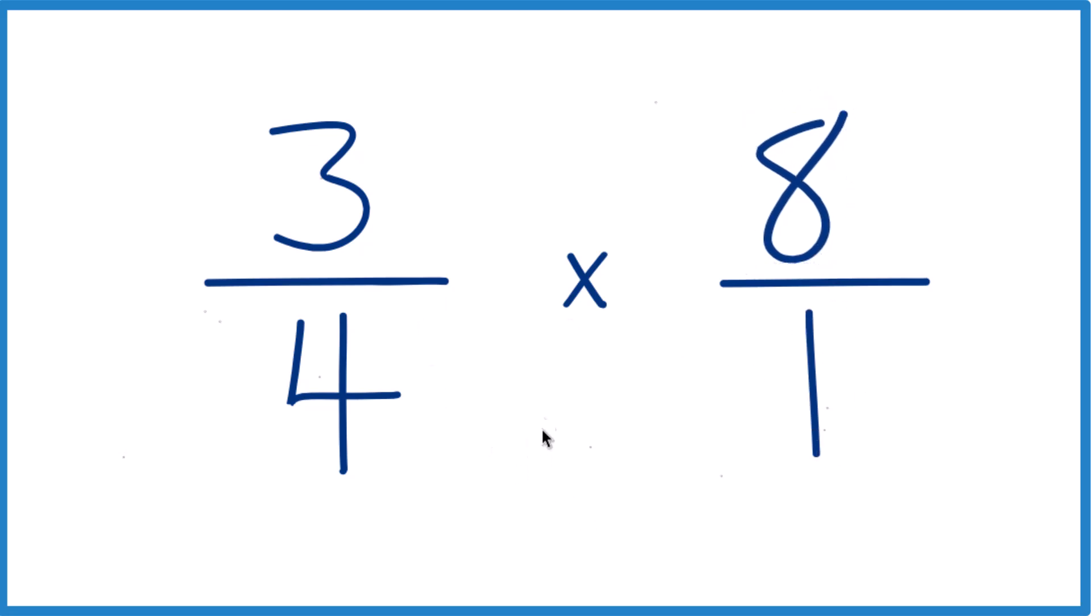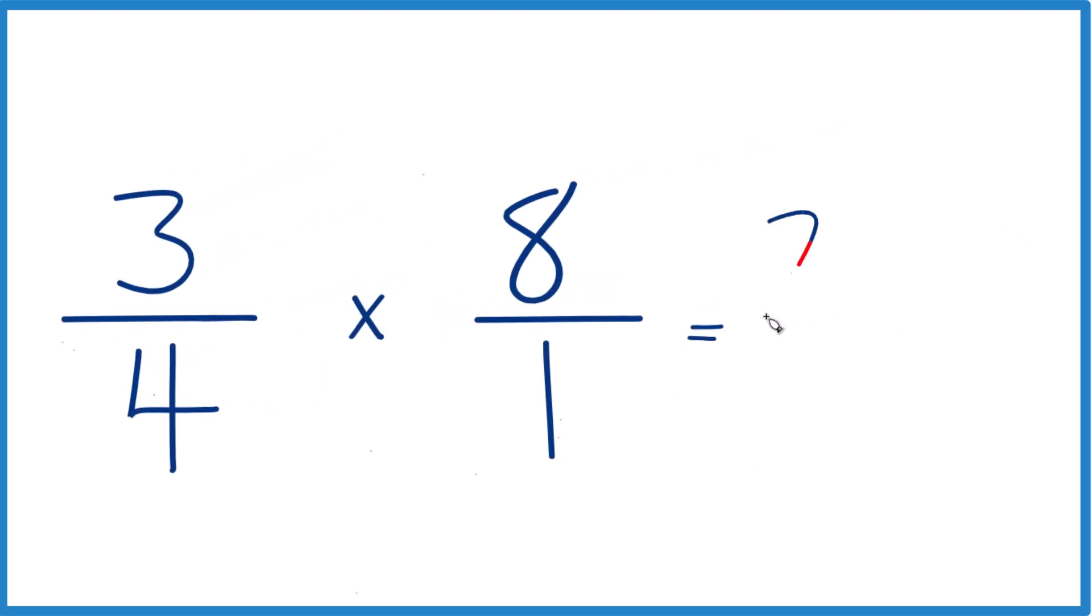Now, with multiplication, it's a lot easier. We multiply the numerators, 3 times 8, that equals 24, and then we multiply the denominators. 4 times 1 is 4.